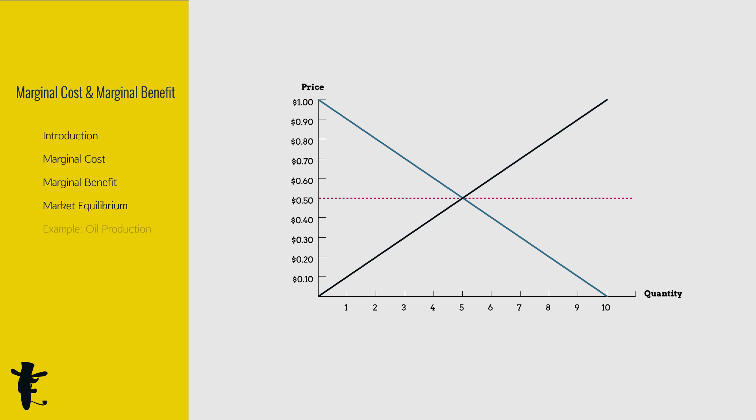Now, we've seen this before. Supply equals the marginal cost. Demand equals the marginal benefit. This is the equilibrium. But why?